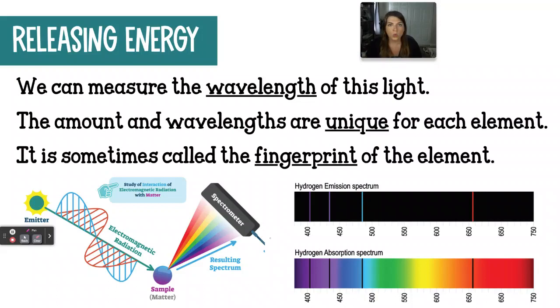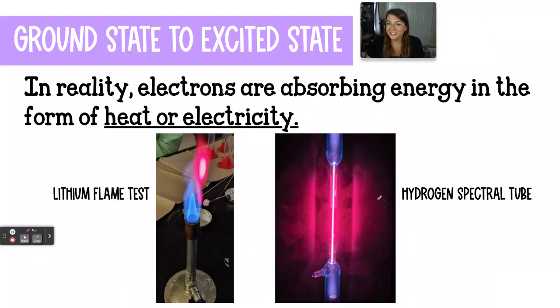When scientists are practicing or doing spectroscopy, they're going to measure the wavelength of this light. The amount and the wavelengths are unique for each element. Strontium has a specific colored light and that is measurable based on its wavelength. Because it's unique, some people will call it the fingerprint of the element. On the bottom, on the right, we have the hydrogen absorption spectrum, which means that hydrogen is going to absorb all of that rainbow light from the purple all the way to the red. It's absorbing all of that, but it will emit two purple wavelengths, a blue wavelength and a red wavelength.